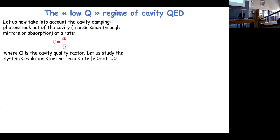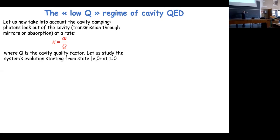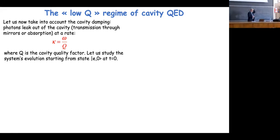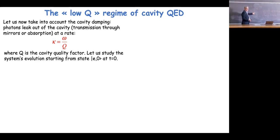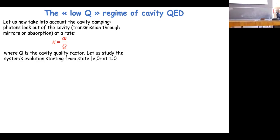I will now talk about the experiments which have demonstrated this, and I would start by following a historical progression by discussing the low-Q regime. The first cavities that we used were not very good, and so the damping time of the field in the cavity was occurring faster than the exchange between the atom and the photon. The field intensity decays exponentially with a rate kappa, and the larger kappa the worse is the cavity. You can write kappa as omega divided by Q, where Q is the quality factor.